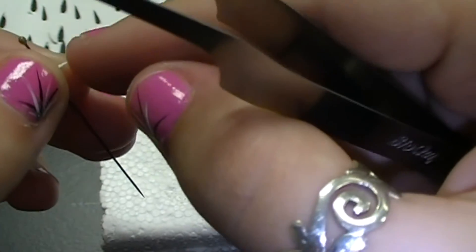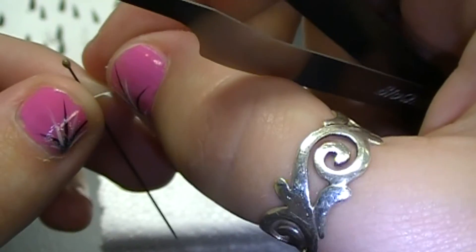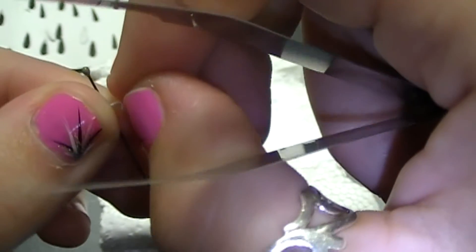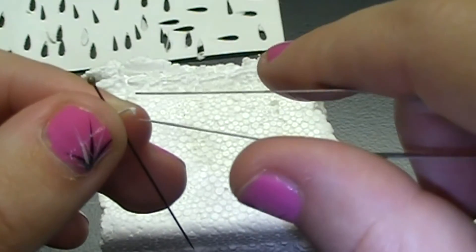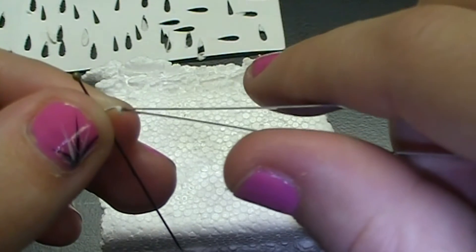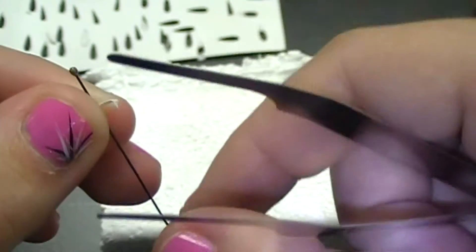So I fold the edge of the point down to form a right angle, and I'll use this part of the point to glue it to the thorax of the insect. You're going to want to glue the point to the right side of the insect.